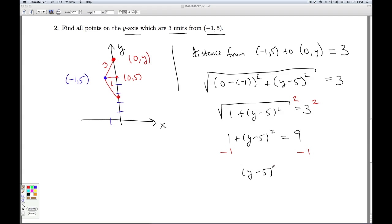So I have (y - 5)² = 8. And now to undo the squaring, I can take the square root of both sides. Now, when I take the square root of something squared, I'm left with the absolute value of that thing. And the square root of 8, I can write as the square root of 4 times the square root of 2, which gives me 2√2.